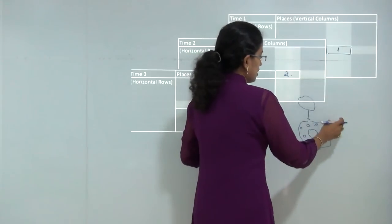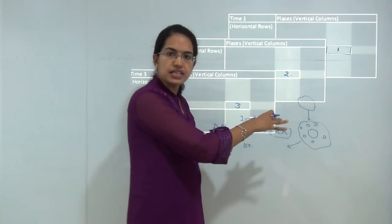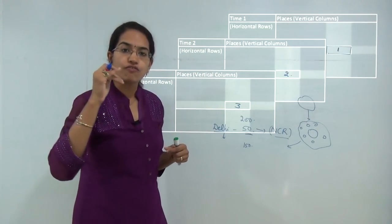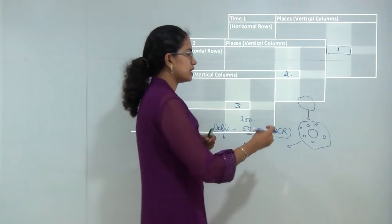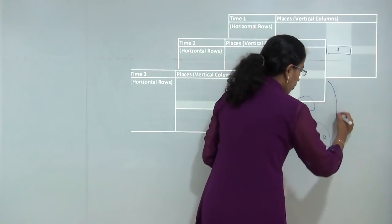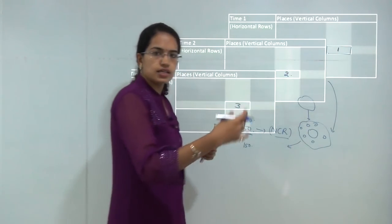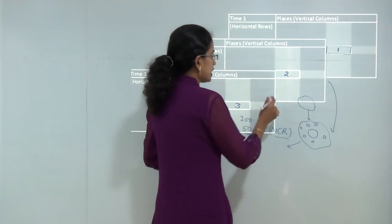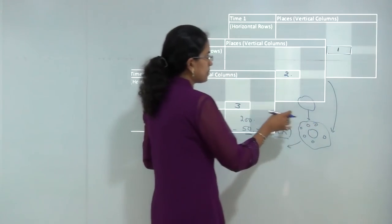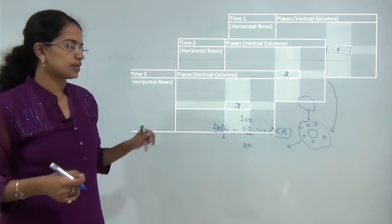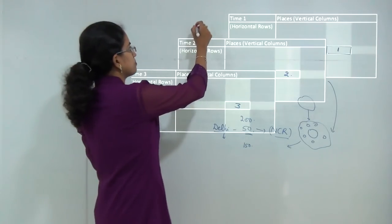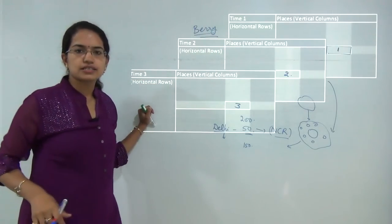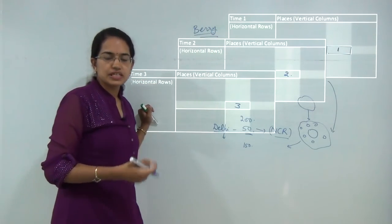When I say I want to study the spatial analysis of Delhi, I cannot just include the spatial analysis of today. I need to study how the city evolved over the years and how it grew or expanded. That is where we need to apply the concept of spatiotemporal analysis, which was put forward by Berry, and this was classified as a concept of regional synthesis.